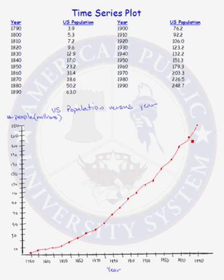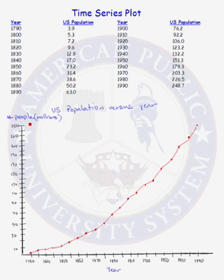In recap, a time series plot is a very useful graph if you want to see how a particular variable is changing over time. Your time variable goes on the x-axis, and your variable that is changing over time goes on the y-axis. You need to include a title for your time series plot and label both your x-axis and your y-axis. And that's it.